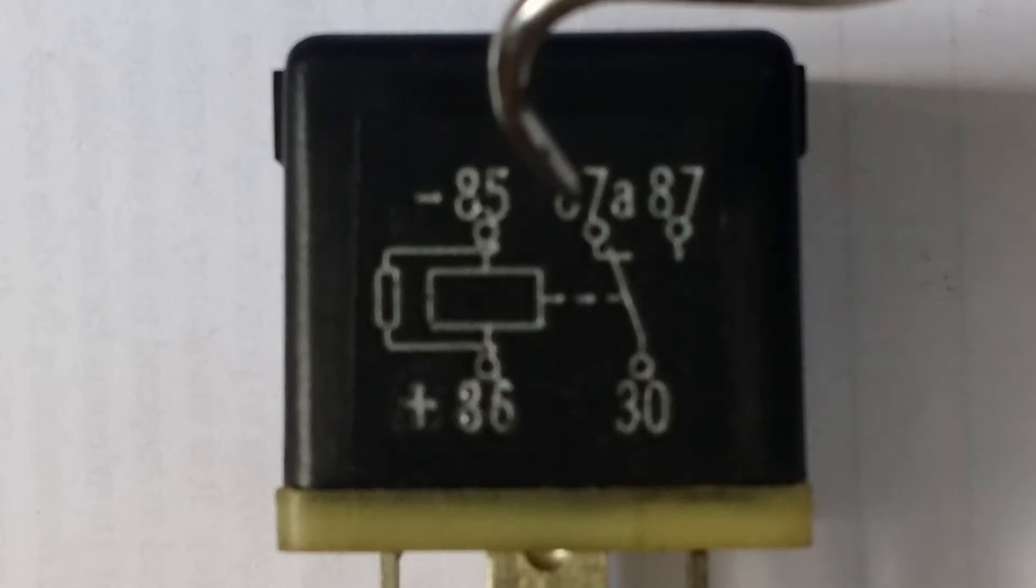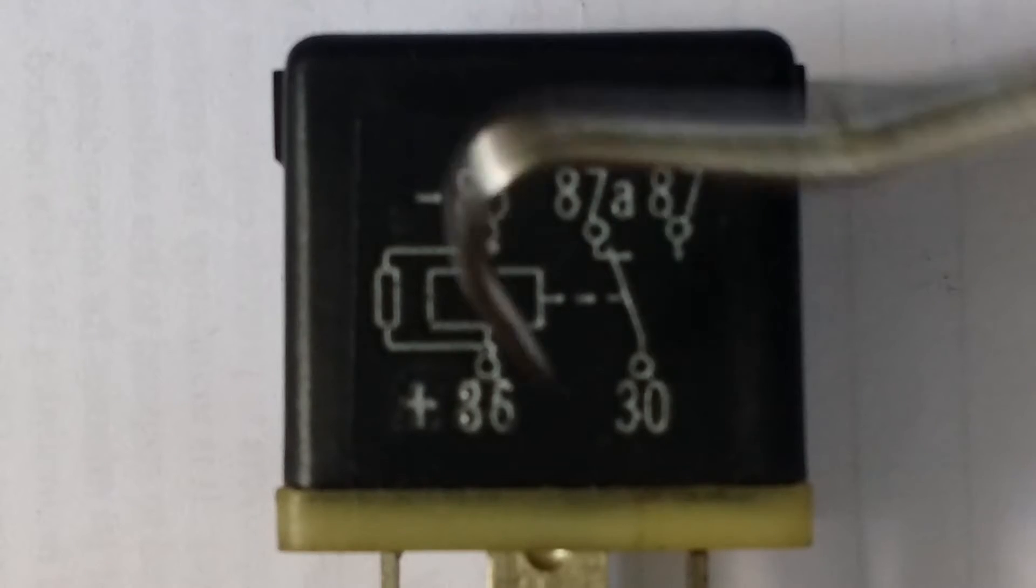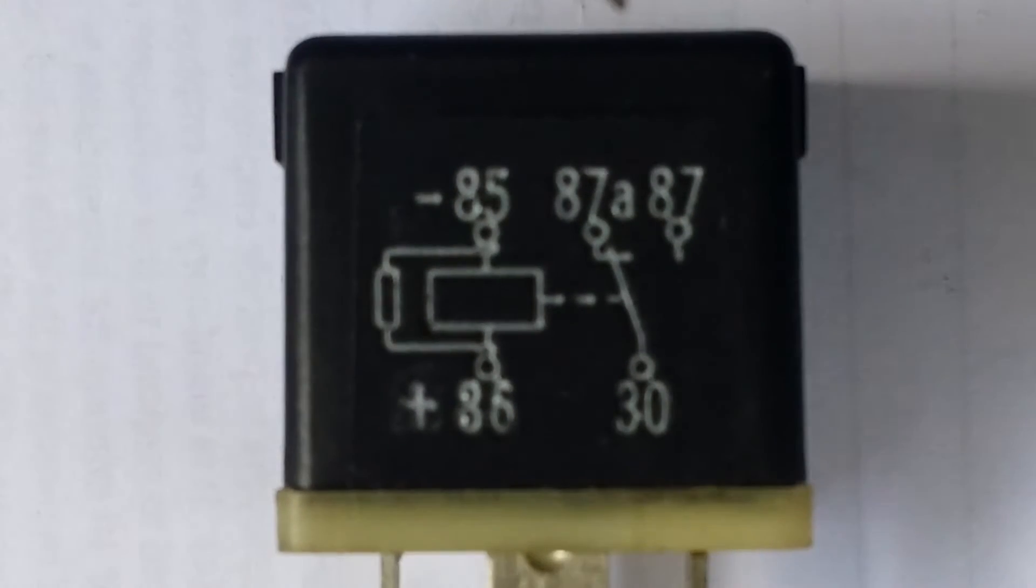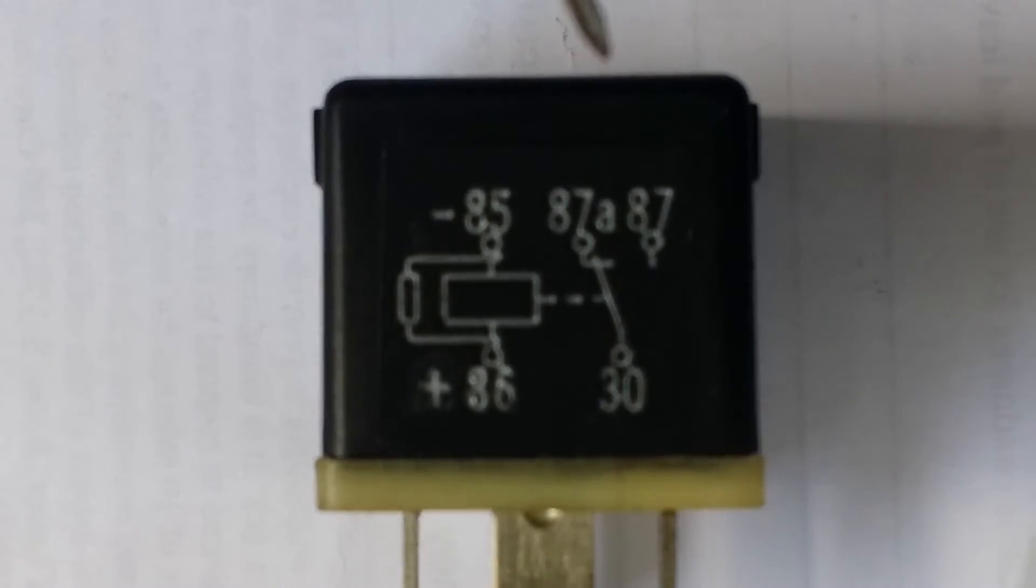When you're looking at the schematic, there'll be a schematic on the back side of it. If you're blind like me and you can't read it, you can color it with a silver sharpie and then clean off the top. Then you'll better see the schematic.